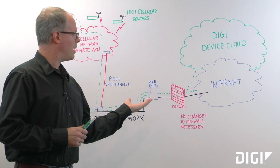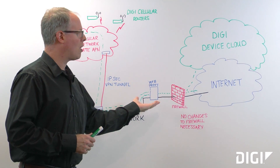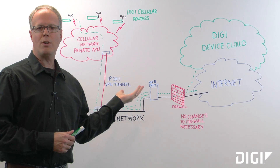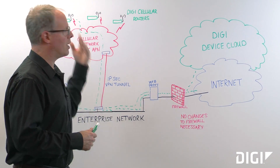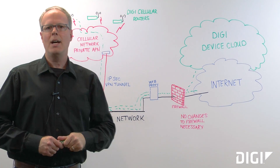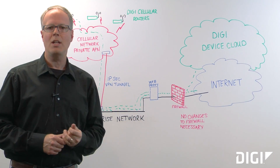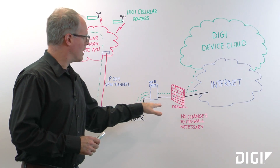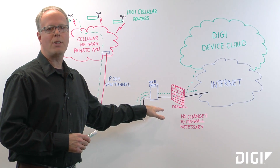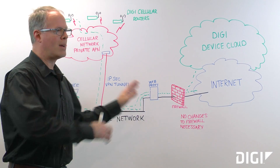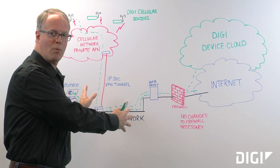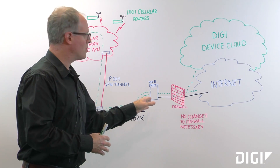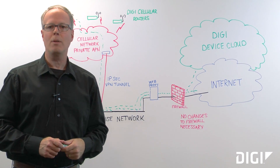This way, the IT manager has a full log of all the connectivity, whether it's an employee or whether it's a Digi device, and they can also shut down access if they need to. So without making any changes to their firewall, we've allowed an IT manager to maintain a secure network and utilize the same solution that they're using for employees.